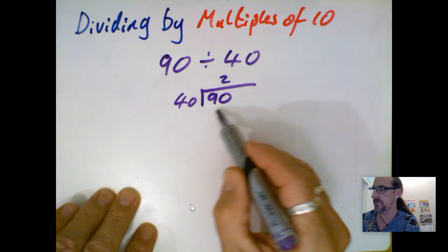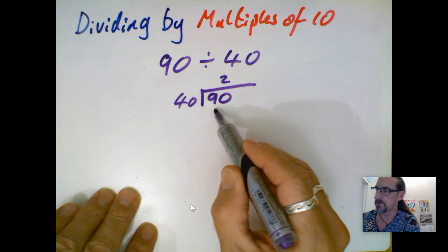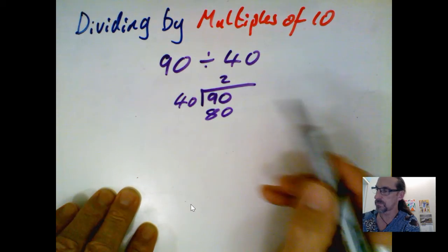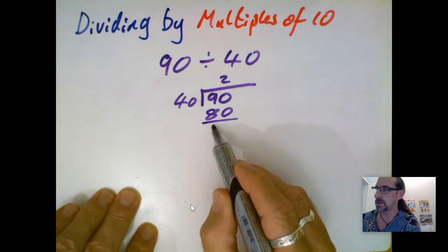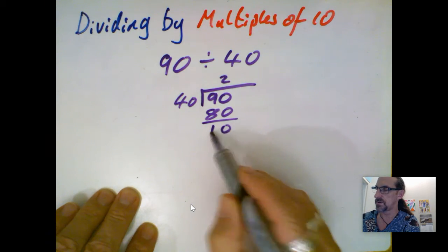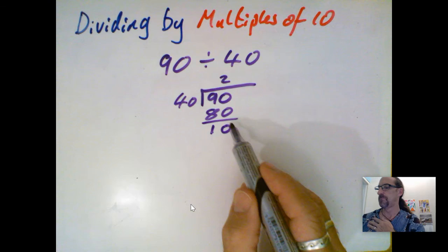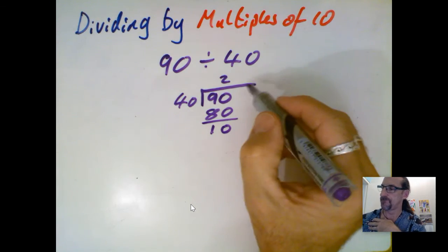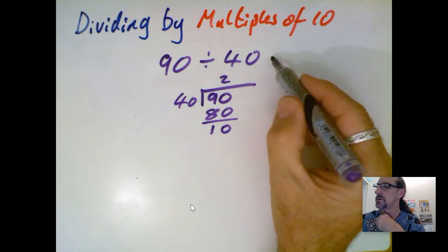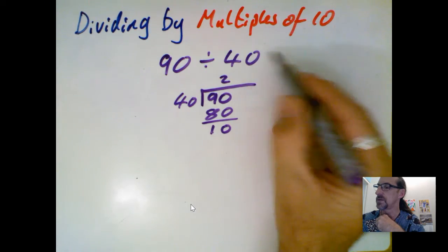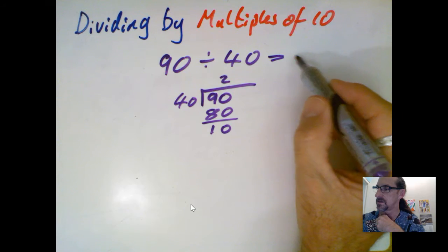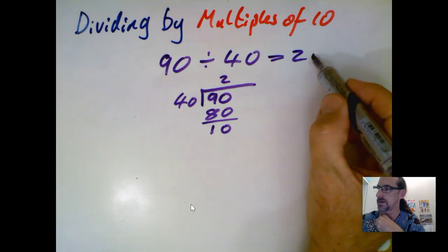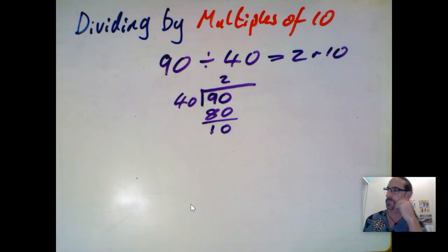And I can see straight away that if I subtract that, I end up with 10, which has not been divided yet, which is a remainder there. So I've got 90 divided by 40 is 2 with a remainder of 10.